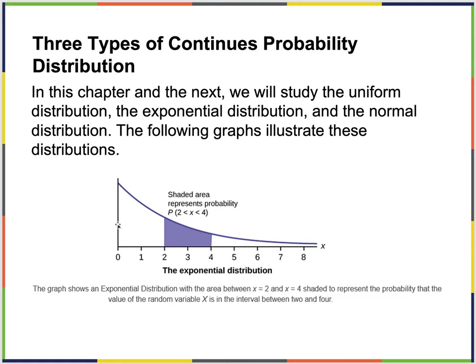The exponential distribution is constantly decreasing and gets closer and closer to the x-axis but never touches it. Do you remember what that's called? That's called an asymptote. The x-axis is an asymptote — the function gets asymptotically closer to it but never touches it.